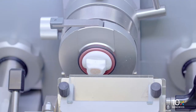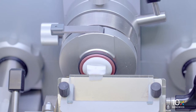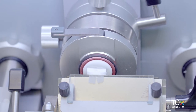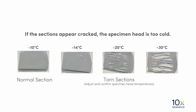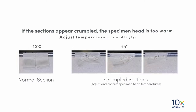Now we are ready to section the tissue. Sectioning speeds depend on the desired thickness of the sections and the condition of the tissues. Harder and thicker sections require slow sectioning speeds. Faster sectioning speeds may lead to cracks or tears in the sections or damage to the tissue block or cryostat. If the sections appear cracked, the specimen head is too cold. If the sections appear crumpled, the specimen head is too warm. Adjust temperature accordingly.